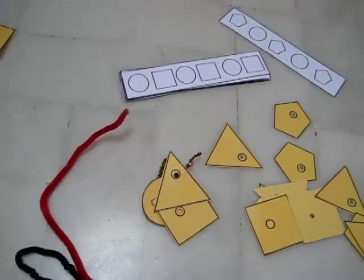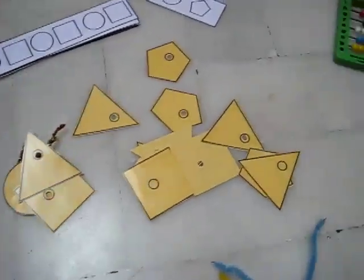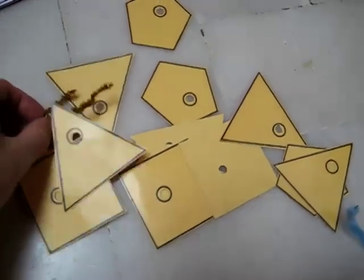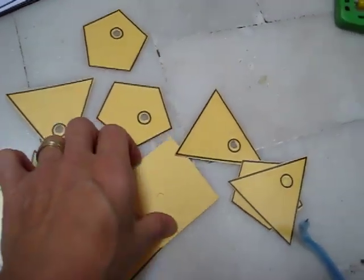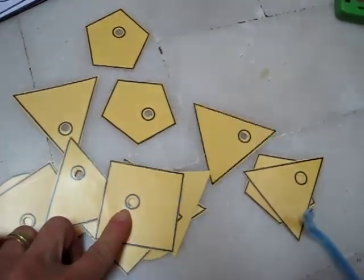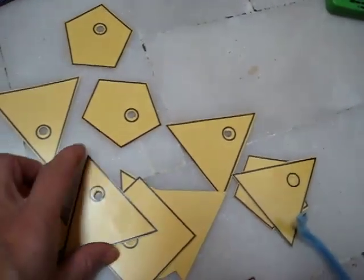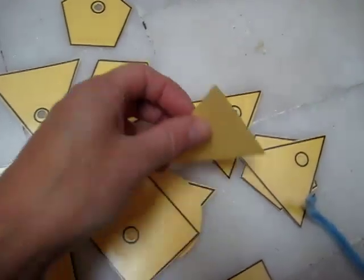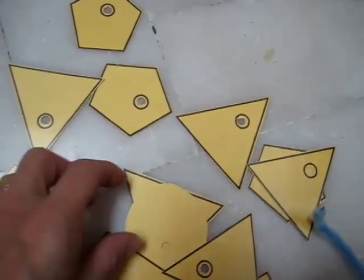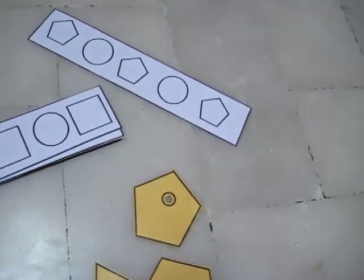We have here a little pattern game. We have some little cards of shapes here with a little hole in the middle. These are the basic shapes: square, circle, triangle, pentagon.